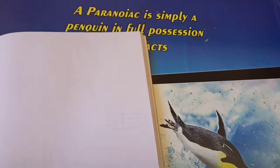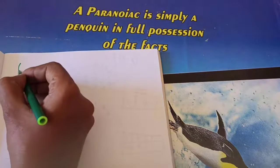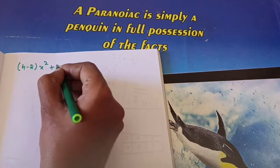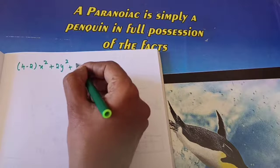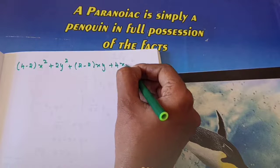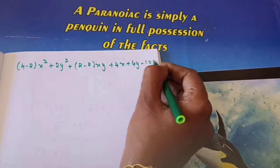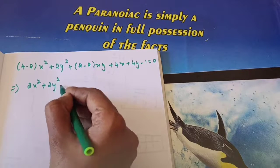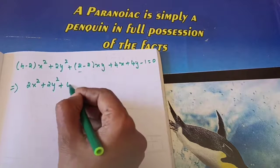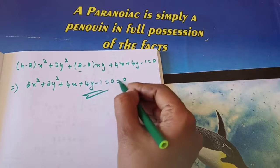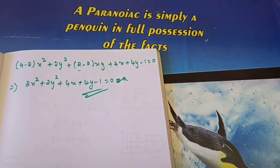Substituting A equals 4 and B equals 2 into the given equation: 4 minus 2 into x square plus 2 y square plus 2 minus 2 into xy plus 4x plus 4y minus 1 equals 0. Simplifying: 2x square plus 2y square plus 0 plus 4x plus 4y minus 1 equals 0. This is the answer.